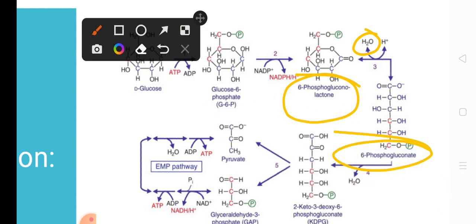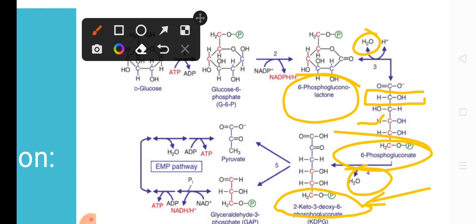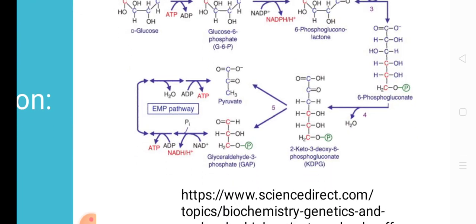From 6-phosphogluconate, via a dehydration reaction, we get 2-keto-3-deoxy-6-phosphogluconate, abbreviated as KDPG. Structurally, there is a liberation of H₂ from carbon-2, which becomes a keto group, and a removal of oxygen from carbon-3, making it deoxy. This gives us 2-keto-3-deoxy-6-phosphogluconate — hence the name.